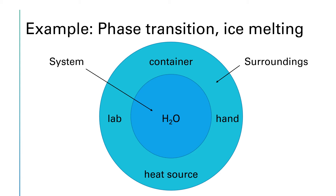Let's look at a very specific concrete example of a phase transition: ice melting. Solid water is going to turn into liquid water. In order for this to happen, for the ice to melt, we have to put energy into the ice. Ice is the system; everything else is the surroundings — the heat source, the lab, your hand, the container holding the water. So the surroundings have to transfer heat to the system. Since the heat is going into the system, this is going to be endothermic.